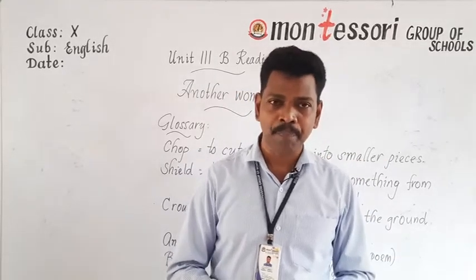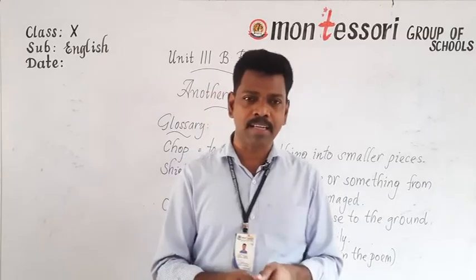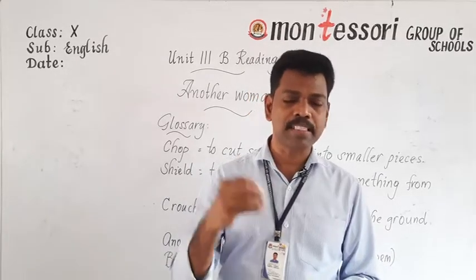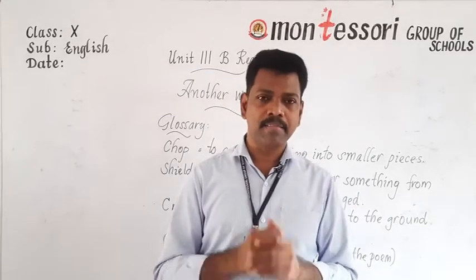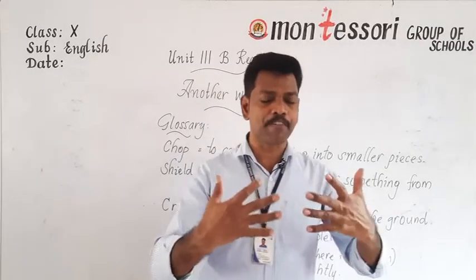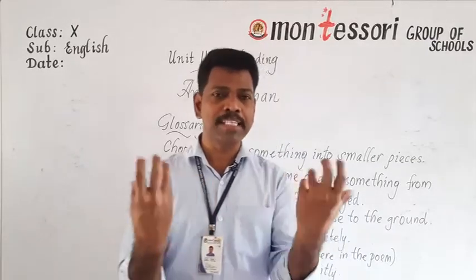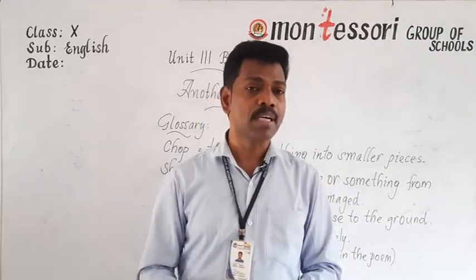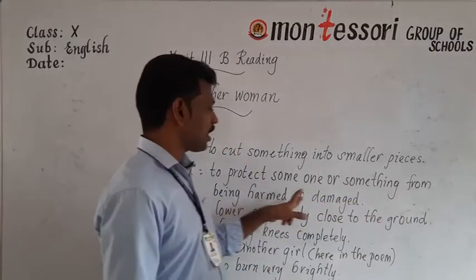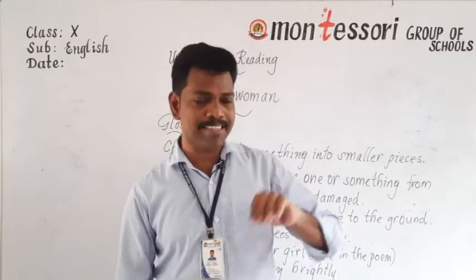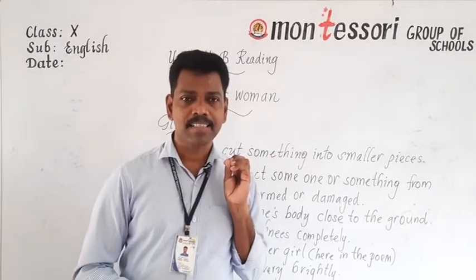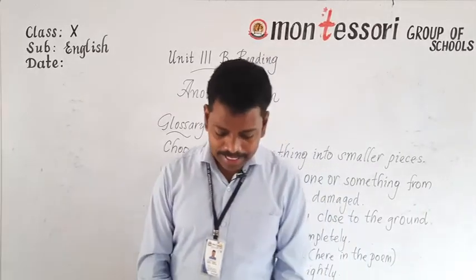The stove works with kerosene; you have to pump the air and it functions through compression. The lady sits nearby the stove, puts the pot on and starts cooking the food. She was shielding her face from the heat. Shielding means to protect someone or something from being harmed or damaged — just as when you unknowingly touch fire, your brain gives the message to pull back. She was silently shielding her face from the heat of the stove.